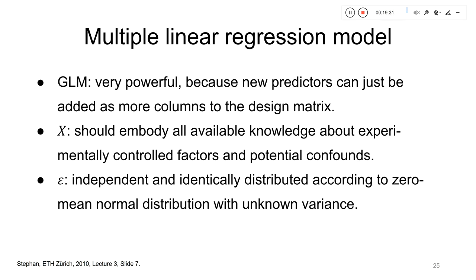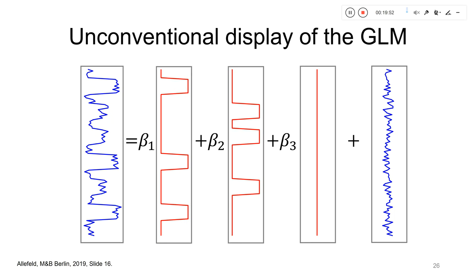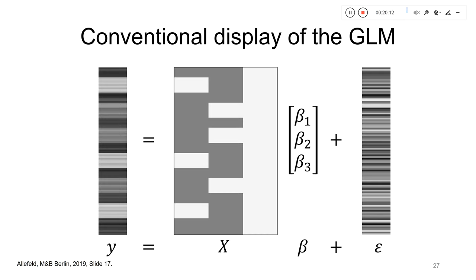The GLM is very powerful because any new variable thought to influence the signal can simply be added as a new column to the design matrix, becoming an additional regressor. The design matrix should ideally capture all knowledge about experimental factors under our control, as well as potential confounds such as subject movement, heart rate, and respiration. The design matrix is often visualized as a grayscale color plot, with data and residual vectors omitted since they change from voxel to voxel.